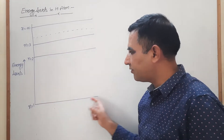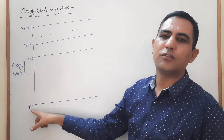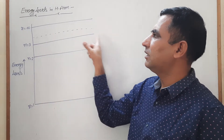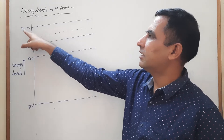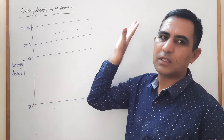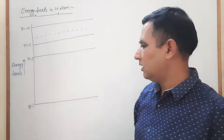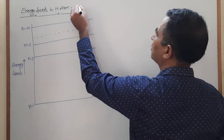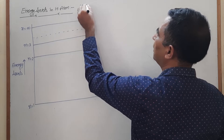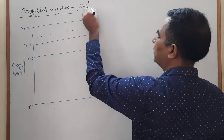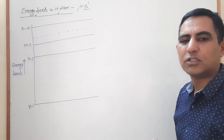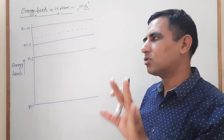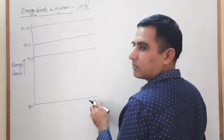Looking at the diagram: this is the first energy level, indicated by n equals 1; this is the second energy level; this is the third energy level; and so on up to the infinite energy level. For hydrogen, the atomic number is 1, so the electronic configuration is 1s1. The electron is present in the first orbit.